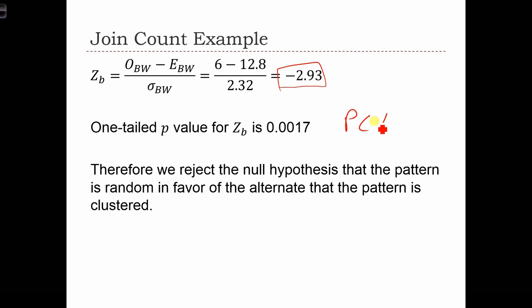p is less than alpha. And therefore, we reject the null hypothesis that the pattern is random in favor of the alternative hypothesis, that the patterns of influenza exhibit a clustered map pattern.